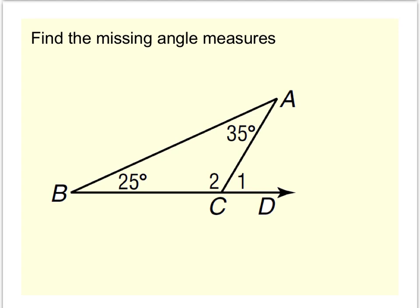Angle 1 is an exterior angle to triangle ABC. And as a result, I know that the exterior angle theorem says angle 1 is equal to the sum of the two remote interiors. Now, the two remote interior angles are the ones that don't touch angle 1. In other words, the two remote interiors would be 35 and 25.